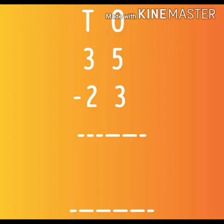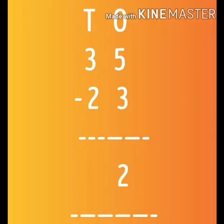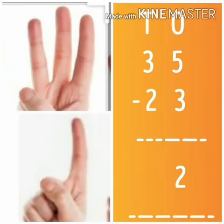In the next example, we have 35 minus 23. On the ones place we have five — put up five fingers and three down. How many are left? Two. On the left side we have three — three fingers up, two down. How many are left? One. So our answer will be 12.